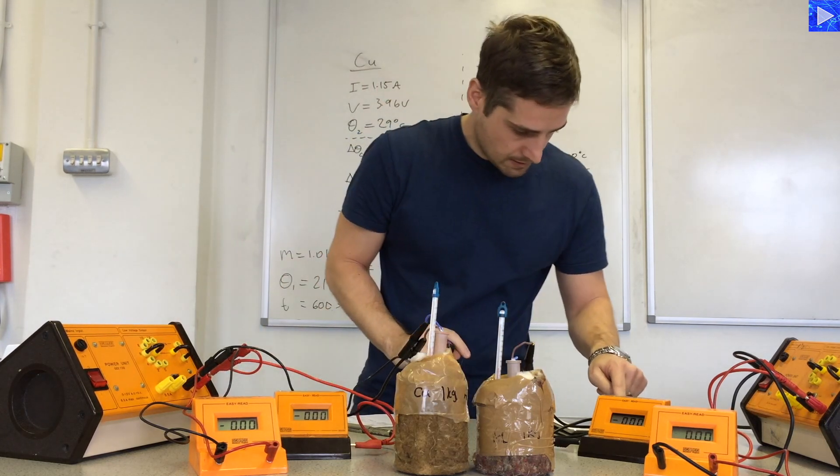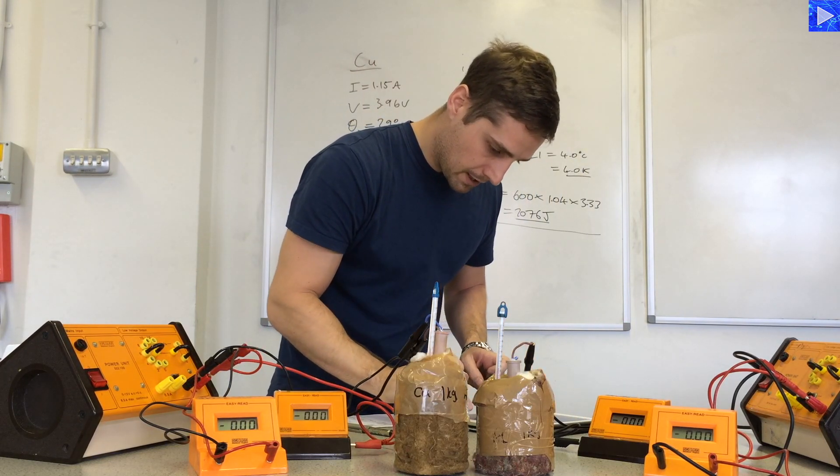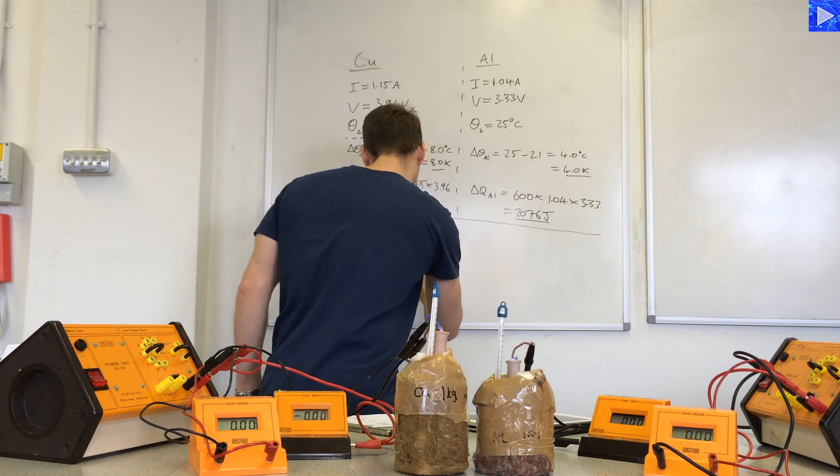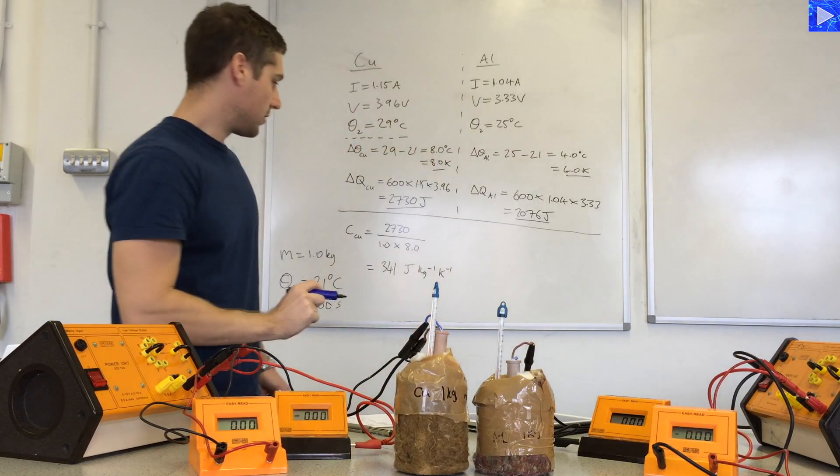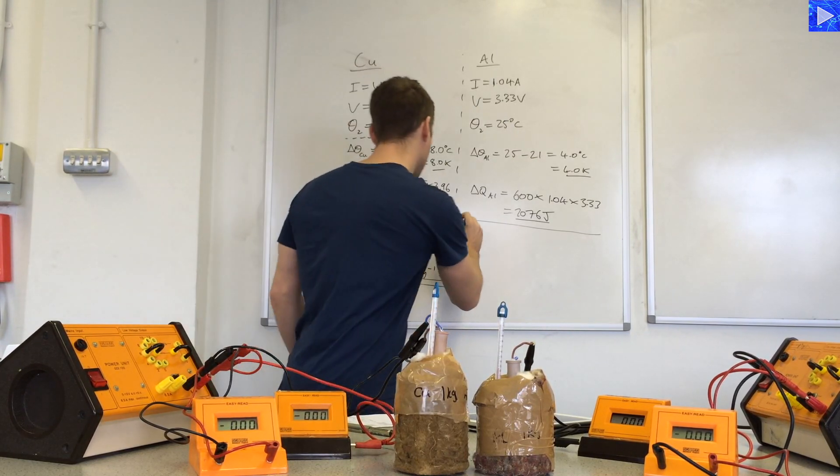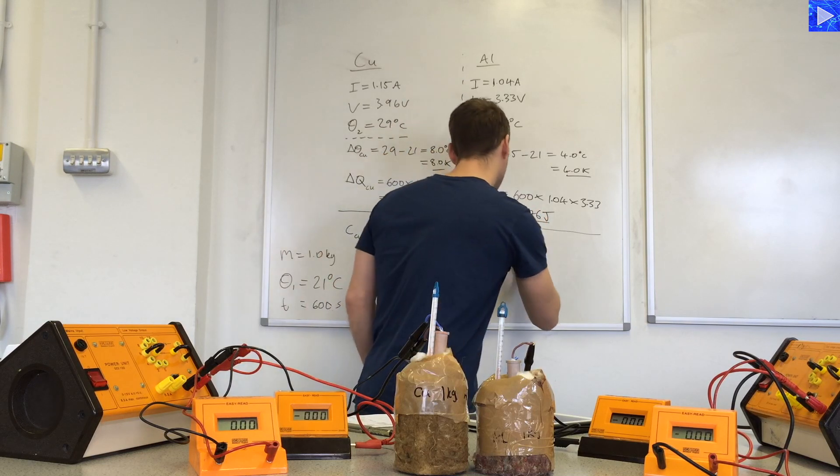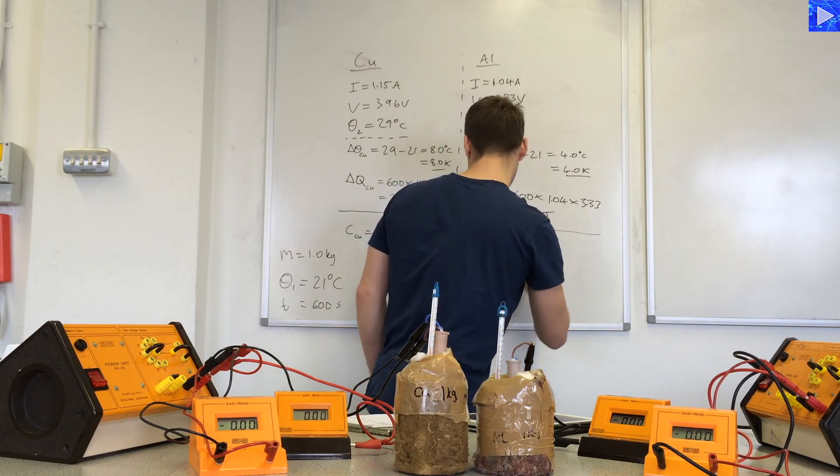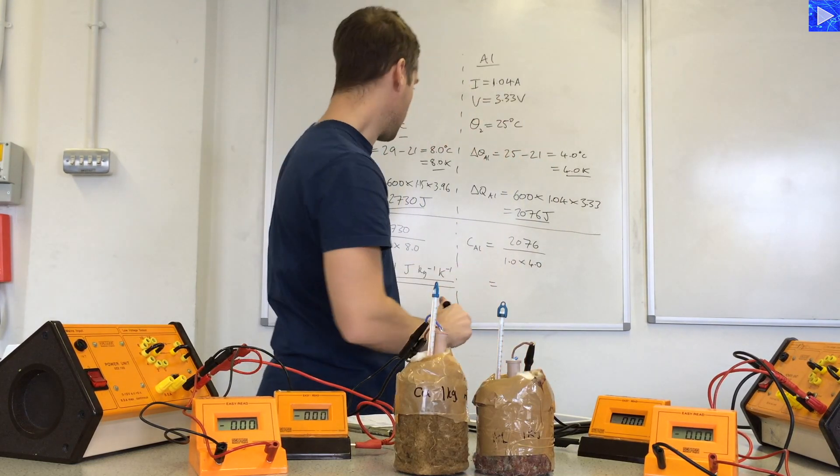So, 2,730 divided by 8, 341 joules per kilogram Kelvin, and putting that right down there. For the aluminum, it's 2,076 divided by 1 times 4, which gives us 2,076 divided by 4, 519.